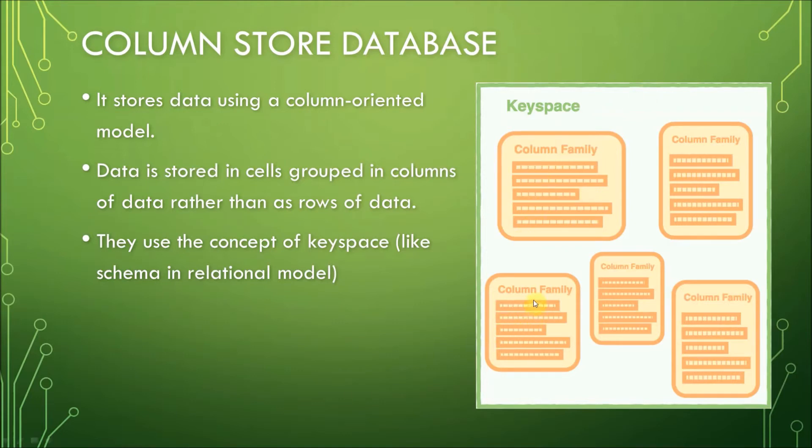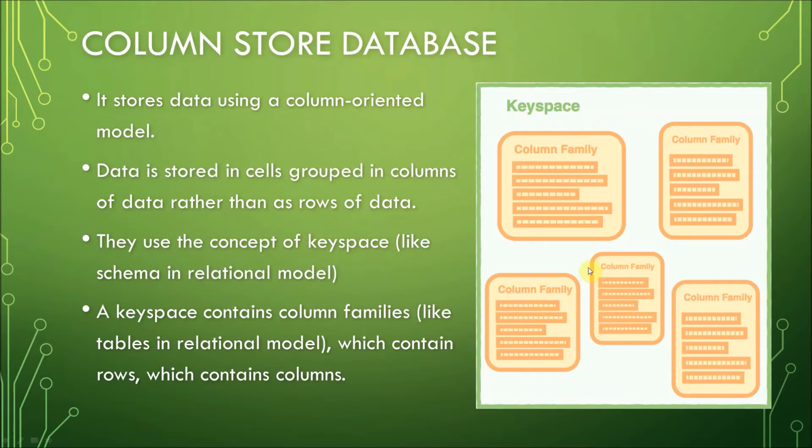A keyspace contains column families. So here are column families here in this example keyspace: 1, 2, 3, 4, 5 column families. Column families here are kind of like tables in a relational model. Column families contain rows. So these are rows. And within each row, there are columns as expressed in this example here.